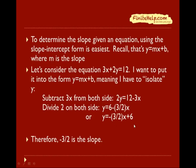Rearranging the terms, I have that y equals negative 3 halves x plus 6. Negative 3 halves is the m part, and the 6 is the b part. m is the slope, so therefore, negative 3 halves is our slope.